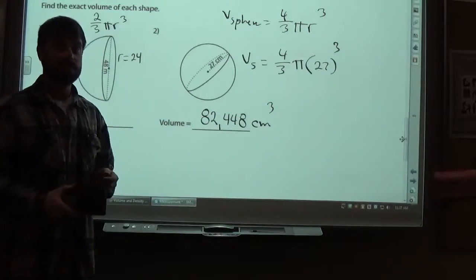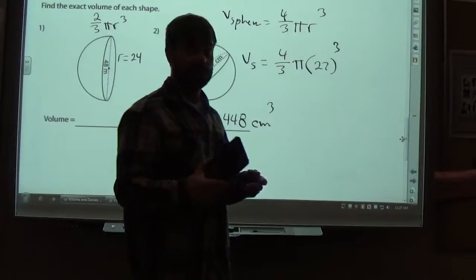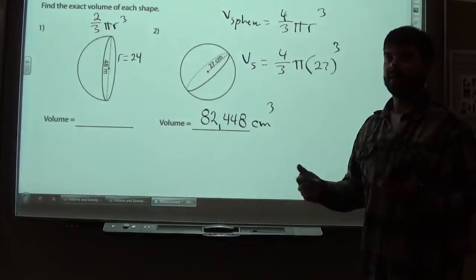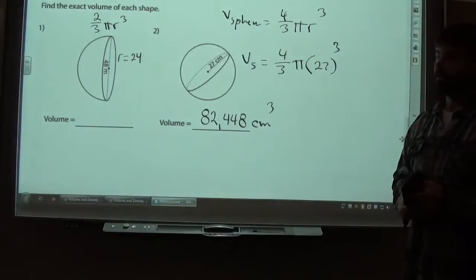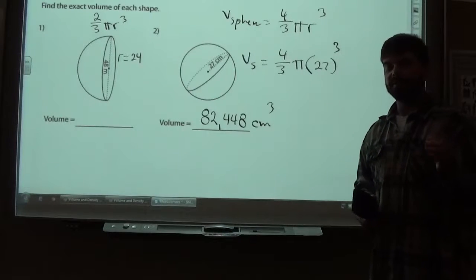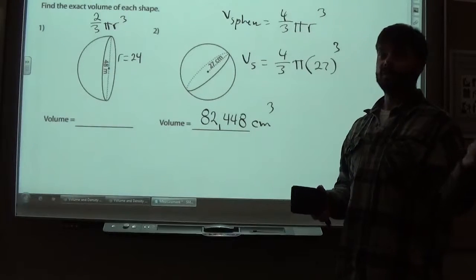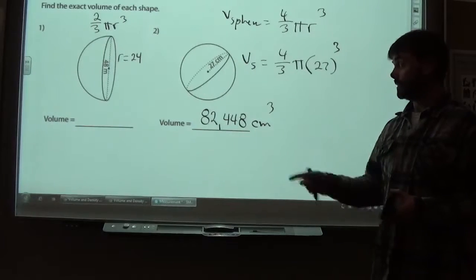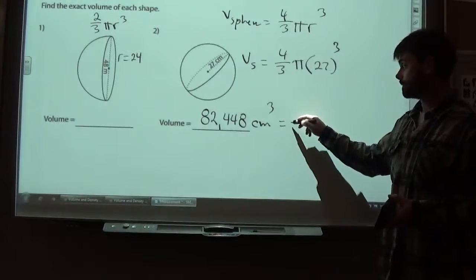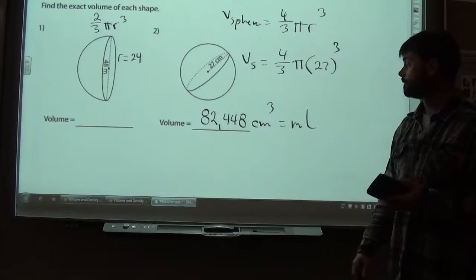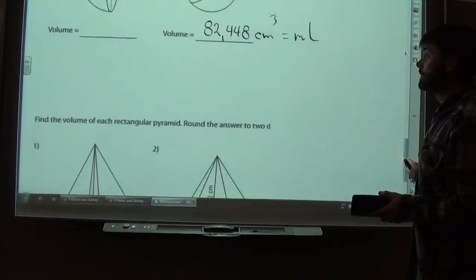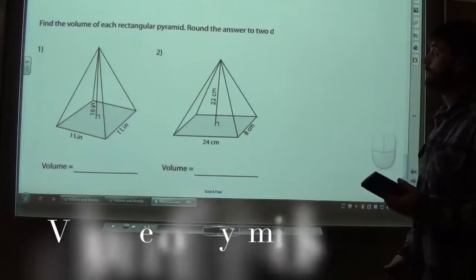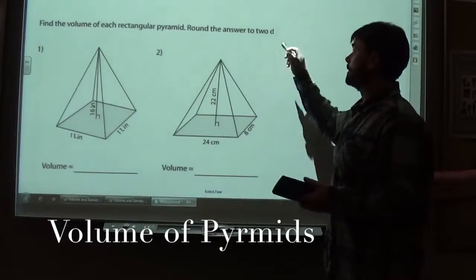And a cubic centimeter is the same thing as a milliliter. So, when you guys are doing the aluminum boat lab, and they ask for volumes, I'll kind of talk a little bit about a method for how you can find the volume of your boat, if you know how many milliliters of water you pour into it. Because a cubic centimeter is the same thing as a milliliter. Finding the volume of a pyramid.